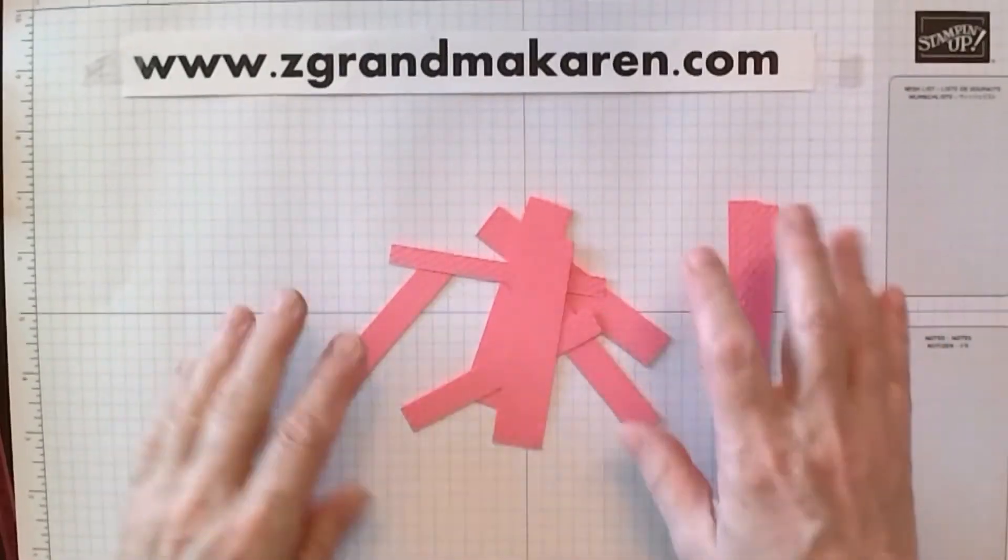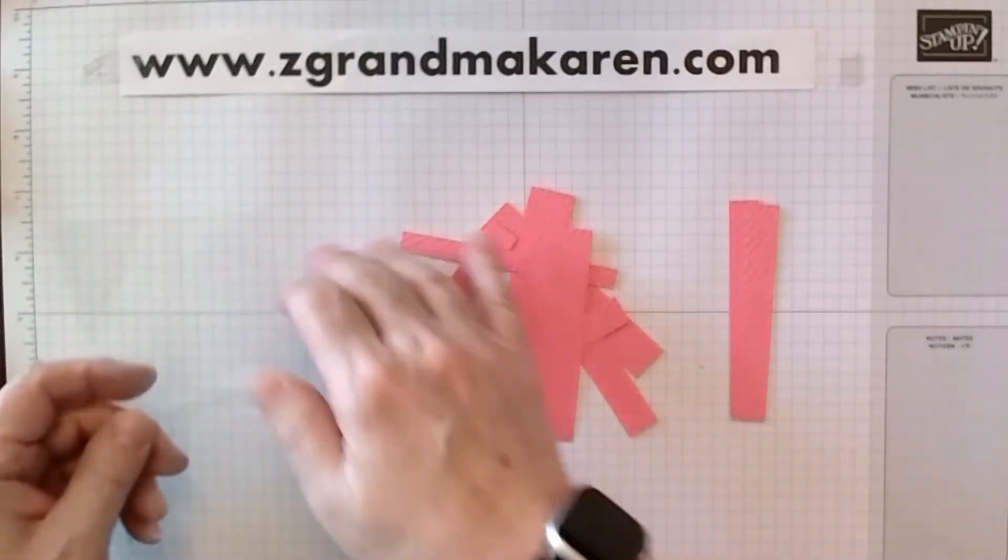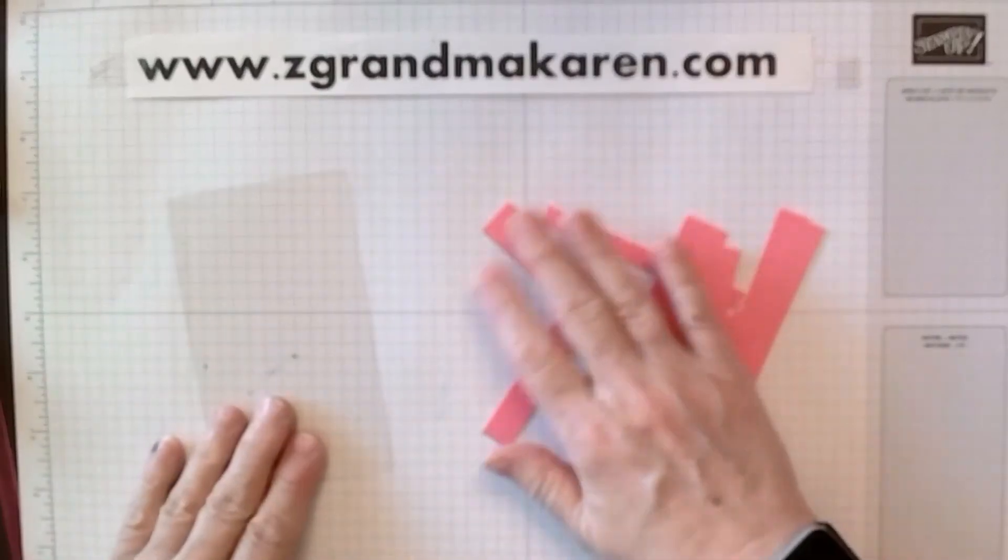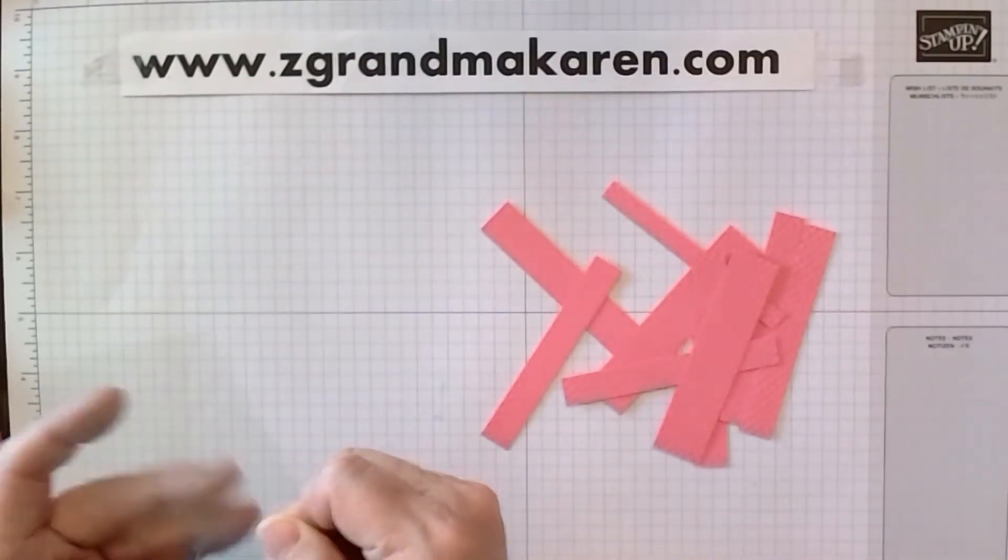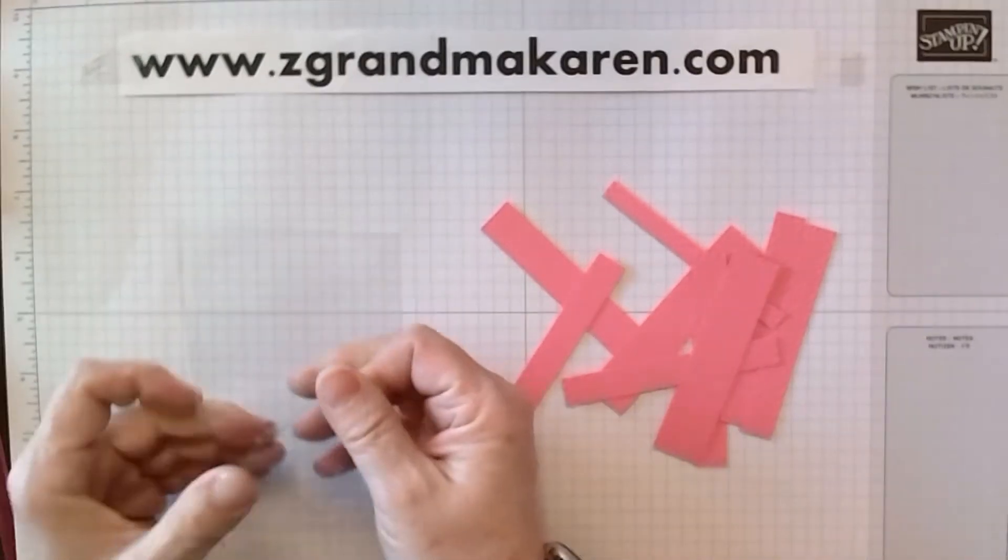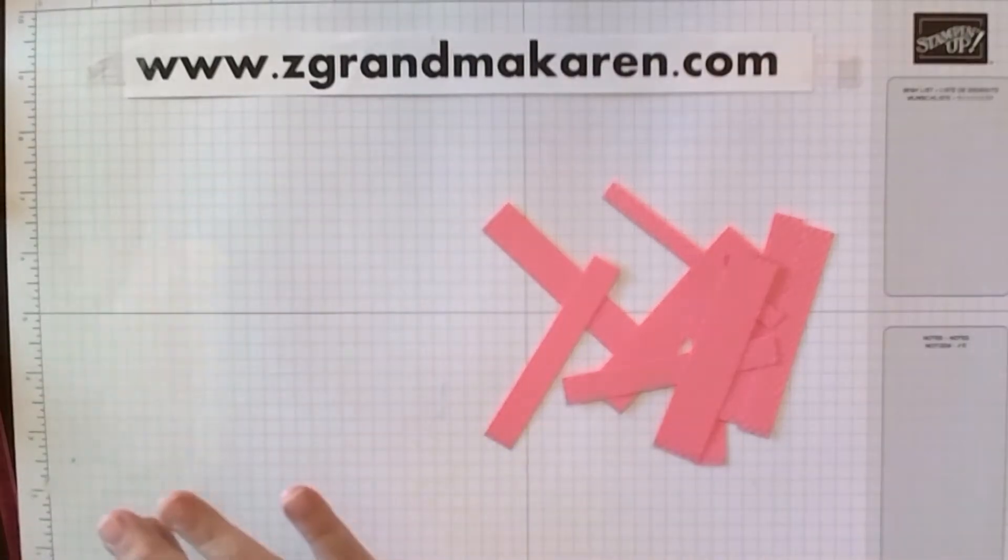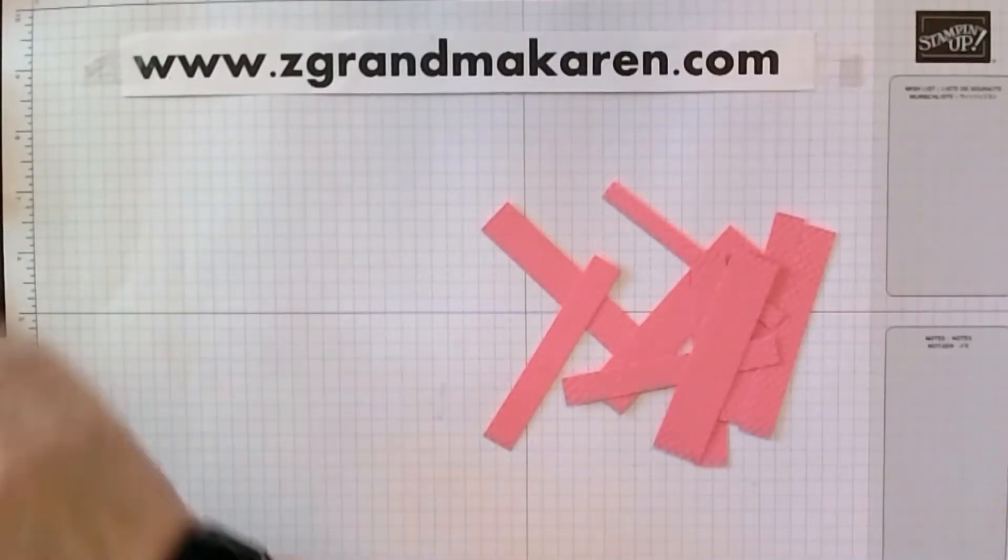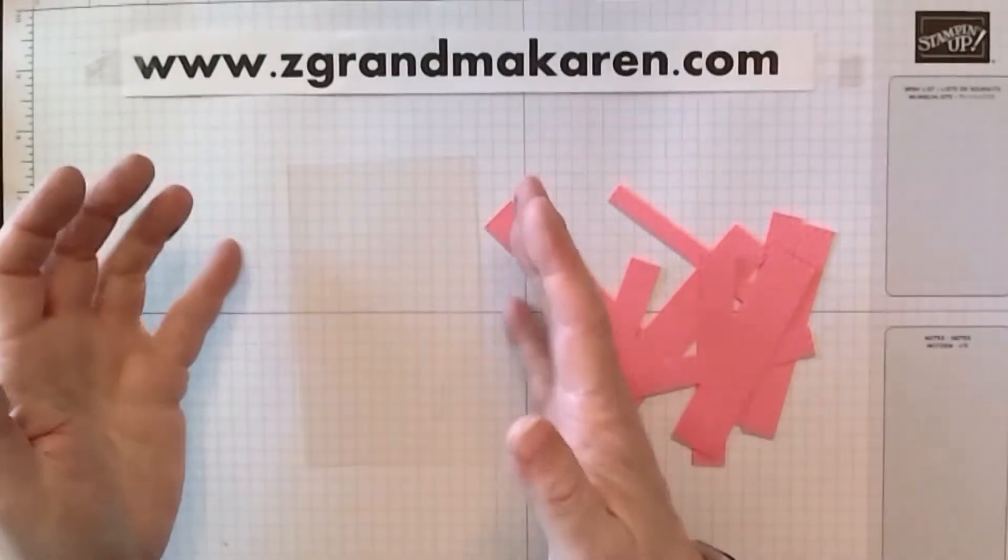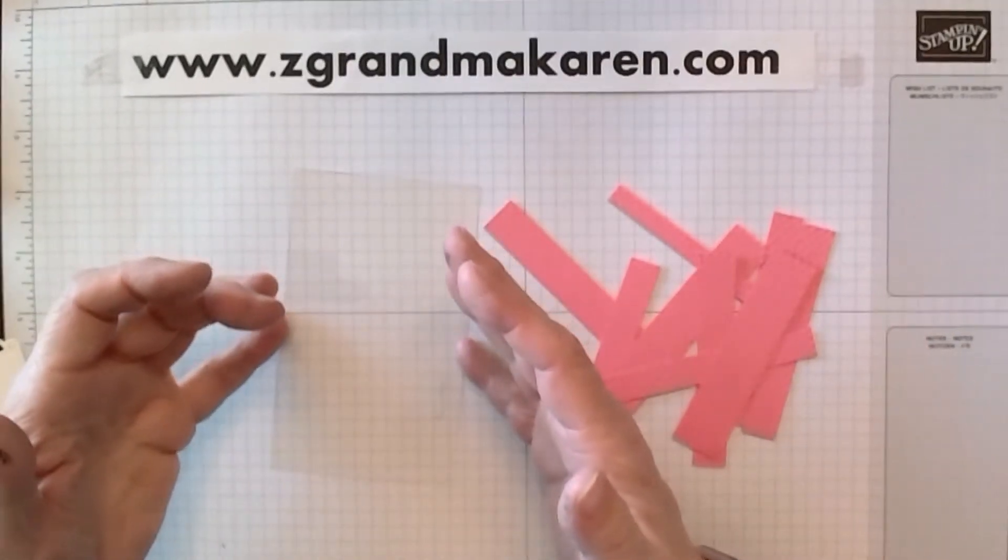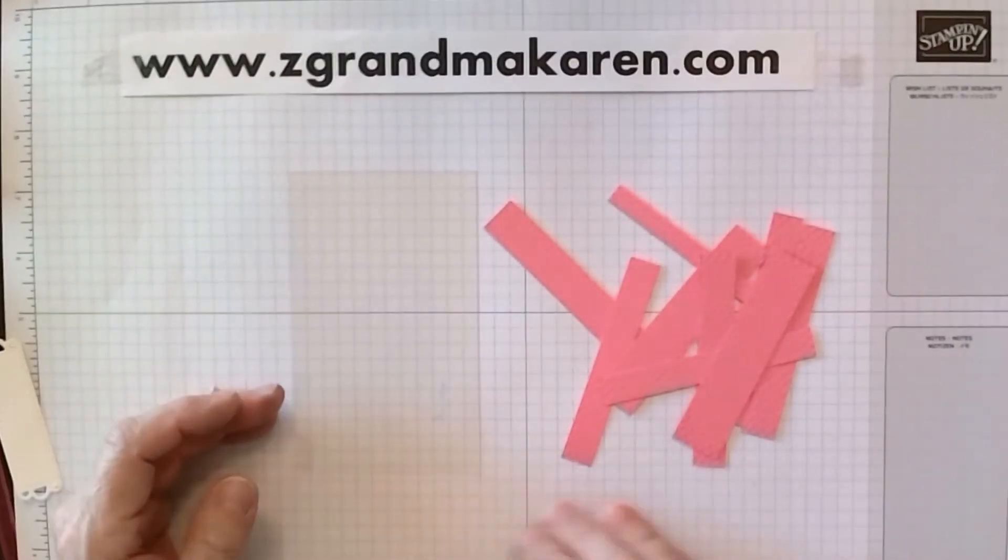So now we're going to take a piece of window sheet. This may be hard to see on camera. This piece is three by five. So the strips are actually a little wider than your window sheet because it's easier to get them straight and to trim afterward.